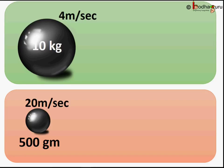Now, say an object of 10 kg is moving at a velocity of 4 meter per second and another object having a mass of 500 gram is moving at a velocity of 20 meter per second.